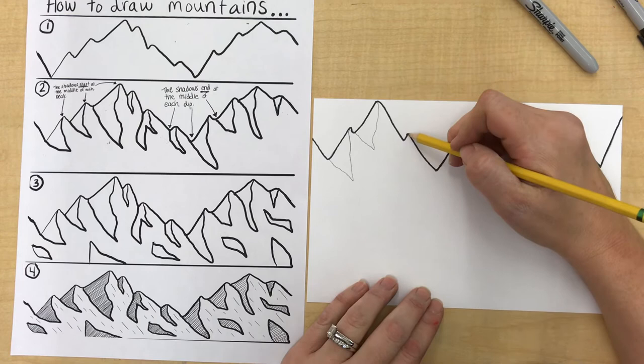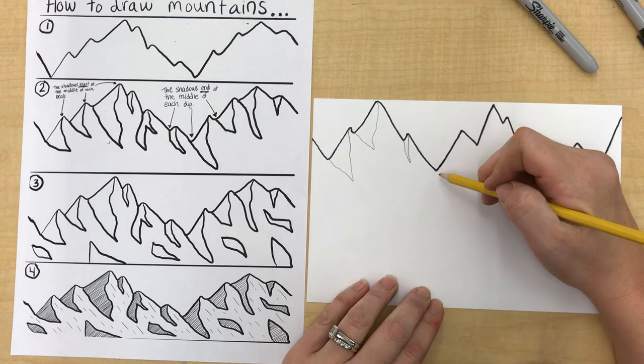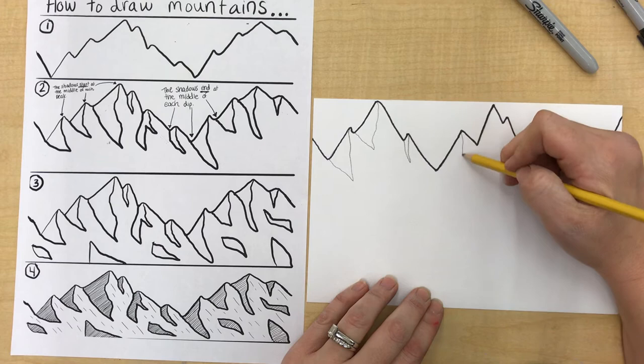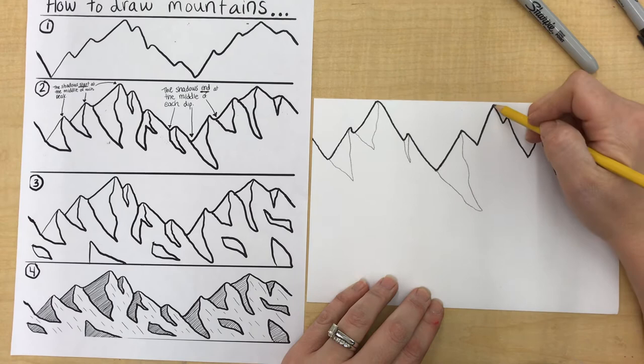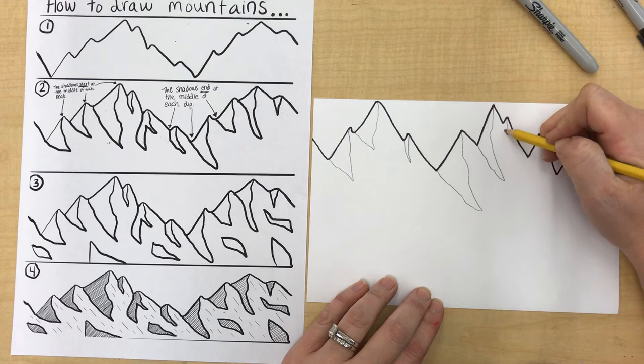So start in the middle of the peak, go down, come up to the middle of the dip. Right here, peak. I wouldn't start there, because that's a dip. I'm going to start at the peak. I'm going to go down really far on this one, and go up to the dip. So peak, down, up to the dip. Peak, that's a little one, down, up to the dip.